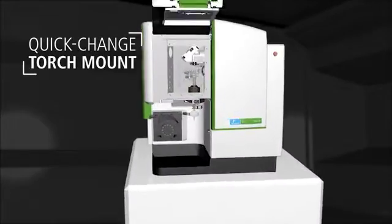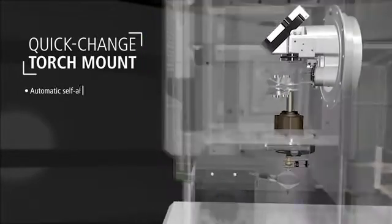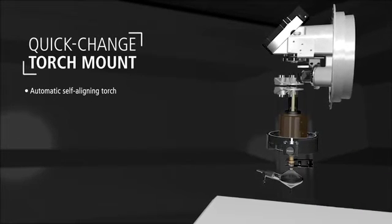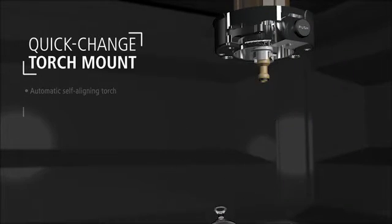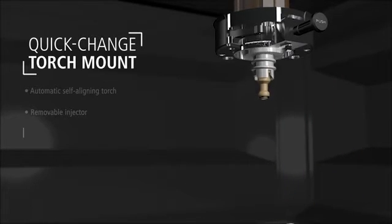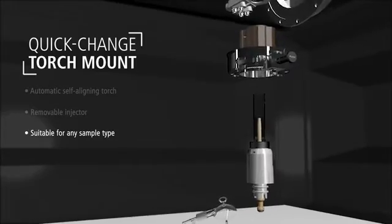The new vertical plasma design, with a novel torch mount, expands instrument usability and offers greater capacity to analyze challenging sample matrices. Easy maintenance and maximum uptime are made possible with Perkin Elmer's removable injector, which is completely independent of the torch.